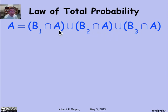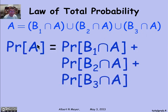That means that if I was talking about cardinality, I could add them up. But in terms of probability, I can apply the sum rule for probabilities and discover that the probability of A is simply the probability of B1 intersection A, B2 intersection A, B3 intersection A.